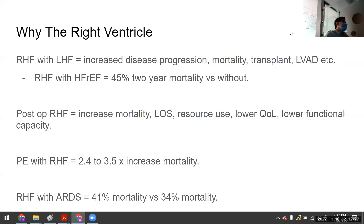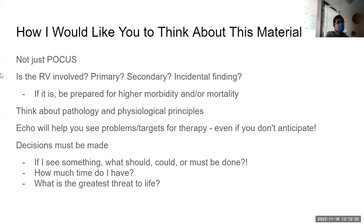So how do we want to think about this material? This talk is not just a whole bunch of echo clips. I think you should consider: is the RV involved in general when you are scanning people? And if you find something, is it a primary problem — primary RV failure or valve failure — or is it secondary? Because that tells you your rank order of importance. Or is this an incidental finding? I'm mindful of this because, as suggested earlier, there's higher morbidity and/or mortality. I will cover some basic pathology and physiological principles as they relate to echocardiography.